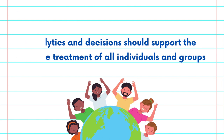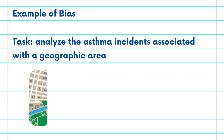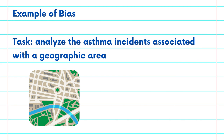Let's look at an example. A data scientist is tasked with analyzing the health risk — more specifically, the asthma incidents associated with a geographic area. Bias may arise in this use case for a variety of reasons. For example, the information related to certain geographic areas may be omitted in the analysis, such as the lower income areas that are near high automotive exhaust, which might in the end make the overall analysis look better.